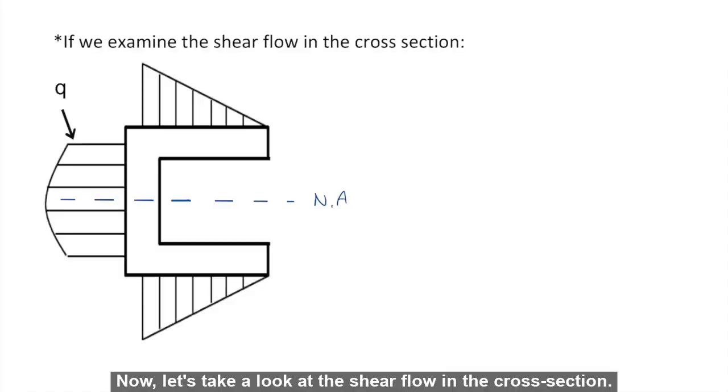Now let's take a look at the shear flow in the cross section. Let q represent the shear flow distribution. The top portion here, let's call this q1, this portion q2, and this bottom portion q3.